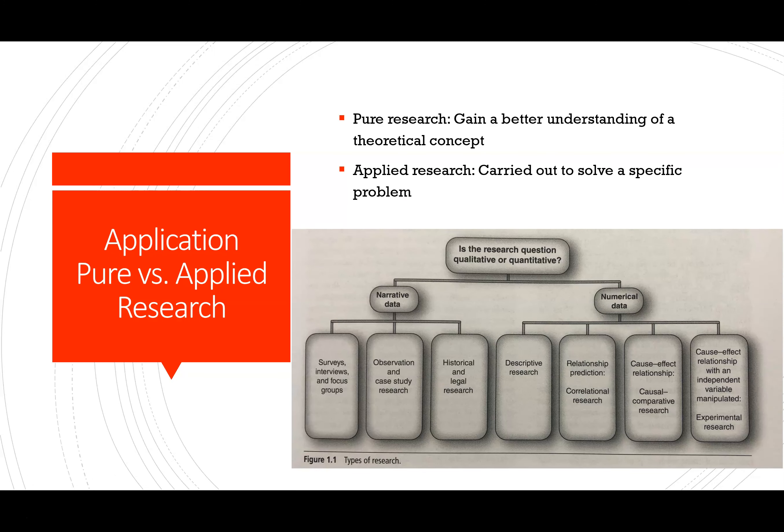Two broad categories to consider: pure research is where we're trying to gain an understanding of a theoretical concept. An example might be research on the theory of leadership, like great man theory — something not necessarily concrete, existing in the realm of theory. Applied research is more what we're probably involved in; this is where we're looking to solve a specific problem or issue within our organization.